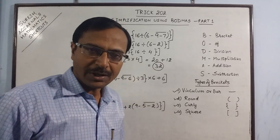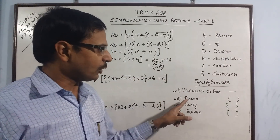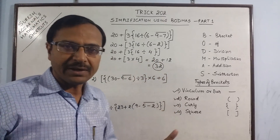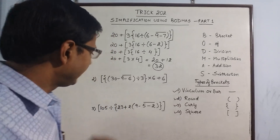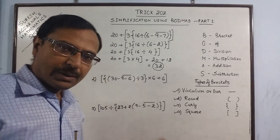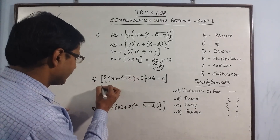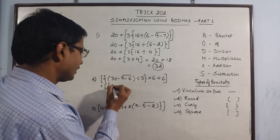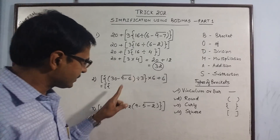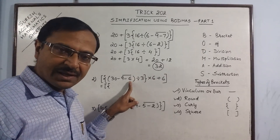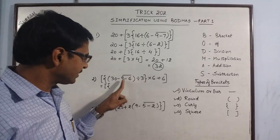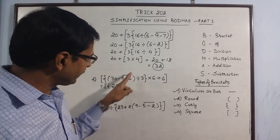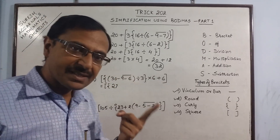We assigned priority to the brackets: removing vinculum first, followed by round bracket, followed by curly bracket, and then the square bracket, arriving at the answer 32. Now let us reduce the number of steps. In the next problem, 9 minus 6 is 3 and 30 minus 3 is 27 — I have removed the vinculum and the round brackets in a single step.